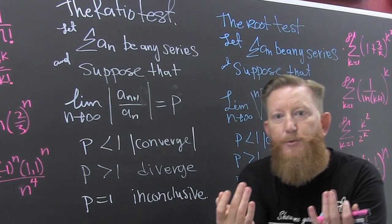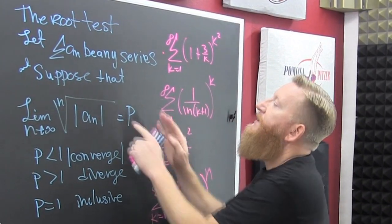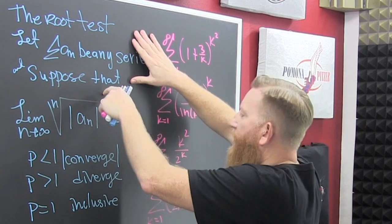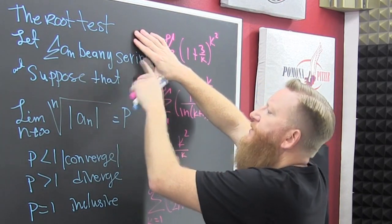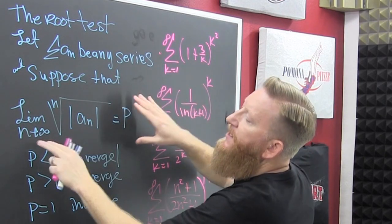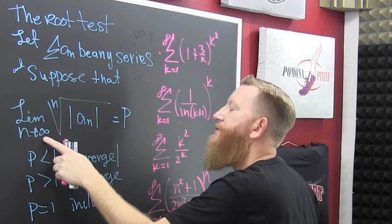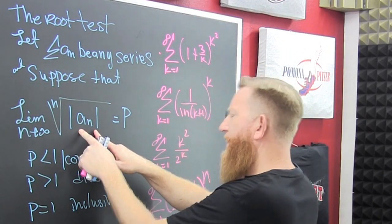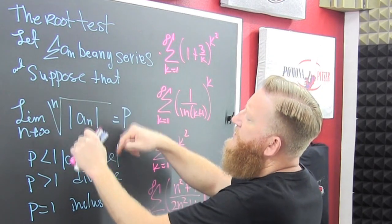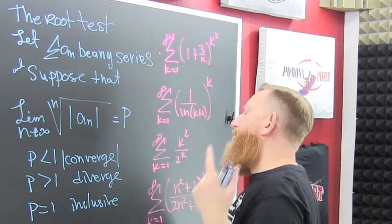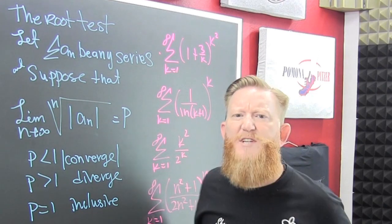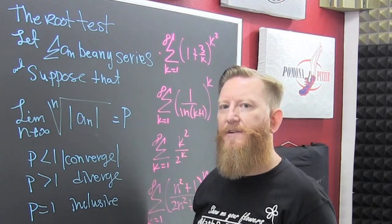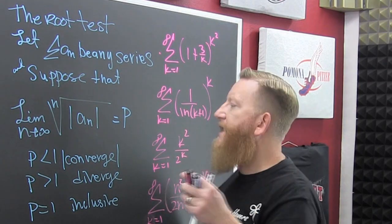If you come over to the other one that is in this section, they call it the root test. So this root test — what is it? Say you have a series, and suppose that you're looking at the limit as n goes to infinity of the nth root of the underlying sequence. These have absolute values, so they're going to converge absolutely or diverge. There are different levels of convergence — we'll get to that.